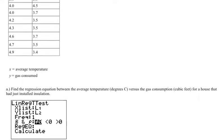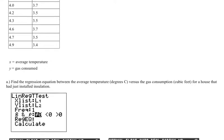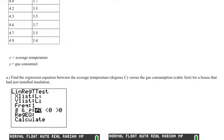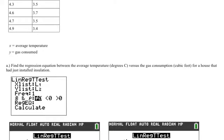We're asked to find the regression equation between the average temperature versus the gas consumed for a house that has just installed insulation. This example shows how to do this on the TI-83 or 84. You can do this on any software you want. You can use R, Excel has some interesting issues with it, so I wouldn't use Excel, but there's lots of other software out there.